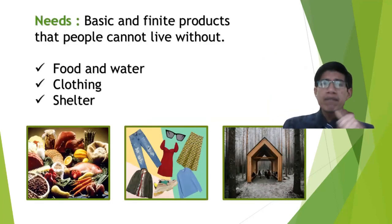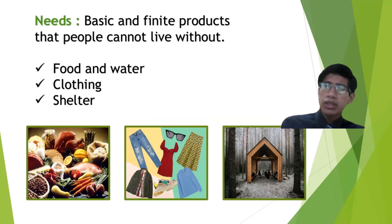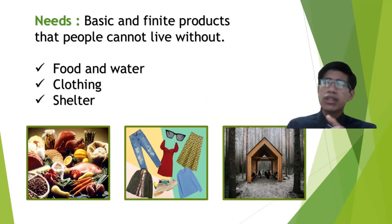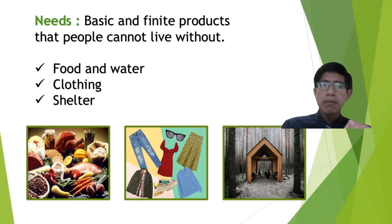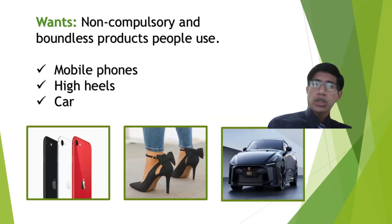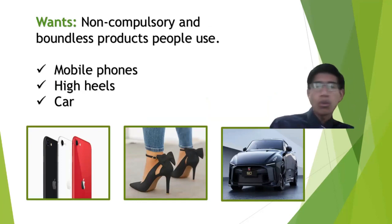Needs are basic and finite products that people cannot live without, for example food and water, clothing and shelter. We also have wants — non-compulsory and boundless products people use, for example mobile phones, high heels, or a car.